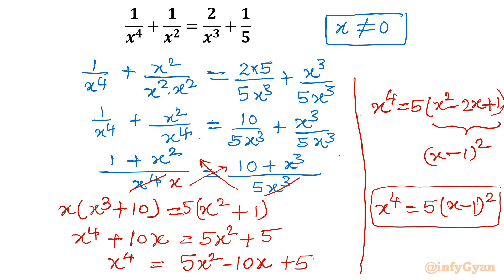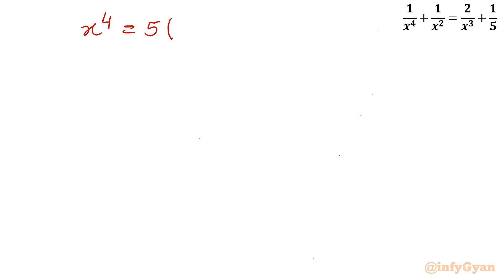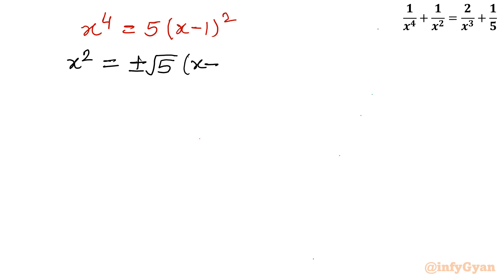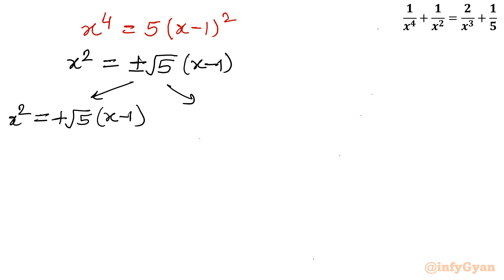This is a very unique and very good equation for us. x⁴ = 5(x − 1)² — the reason I said very good is because we can take the square root of both sides, and the task becomes comparatively easy. Taking the square root: x² = ±√5 · (x − 1). This gives us two equations: first, x² = +√5·(x − 1), and second, x² = −√5·(x − 1).